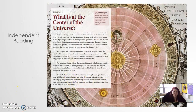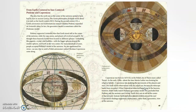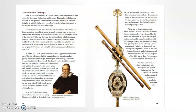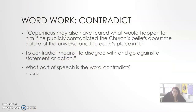We're going to go ahead and do our independent reading for today. Our word work for today is contradict. Copernicus may also have feared what would happen to him if he publicly contradicted the church's belief about the nature of the universe and the earth's place in it. To contradict means to disagree with or go against a statement or action, and it is a verb.